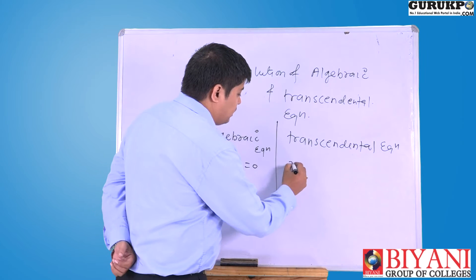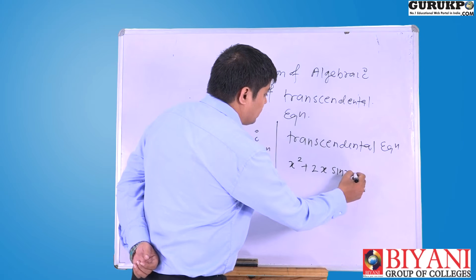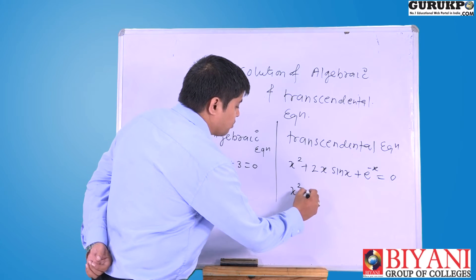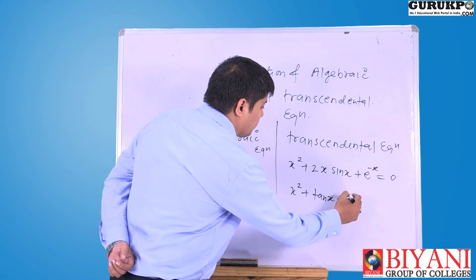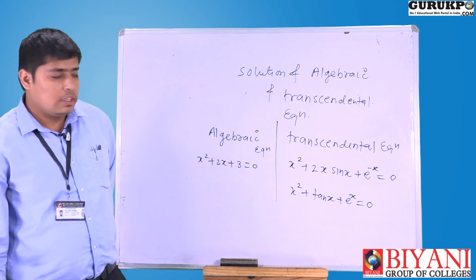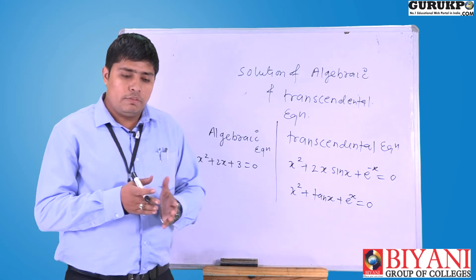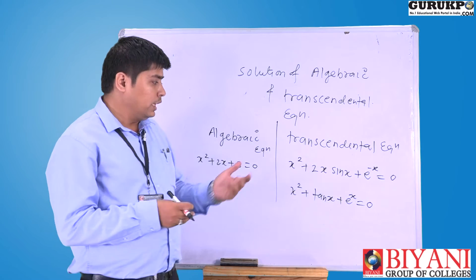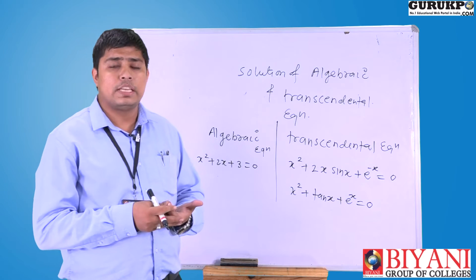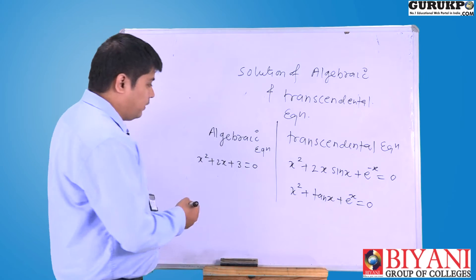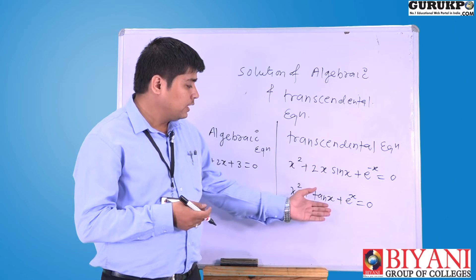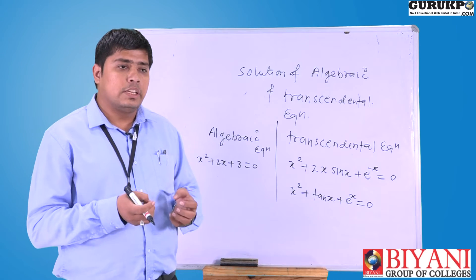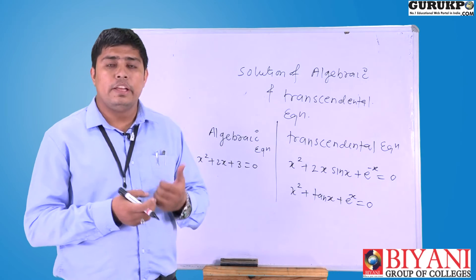On the other hand, equations such as x squared plus k·2x·sin(x) plus e to the power minus x equal to 0, or x squared plus tan(x) plus e to the power x equal to 0, are characterized as transcendental equations. In a transcendental equation we have an algebraic part combined with components of trigonometric functions, hyperbolic functions, exponential functions, or inverse functions. So a transcendental equation is a collection of algebraic, trigonometric, hyperbolic, and inverse functions.